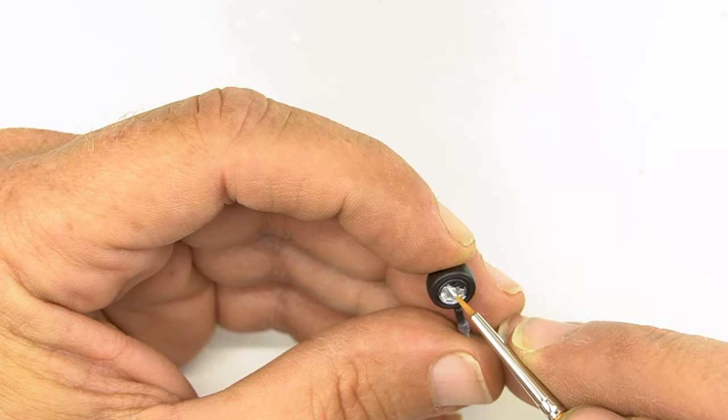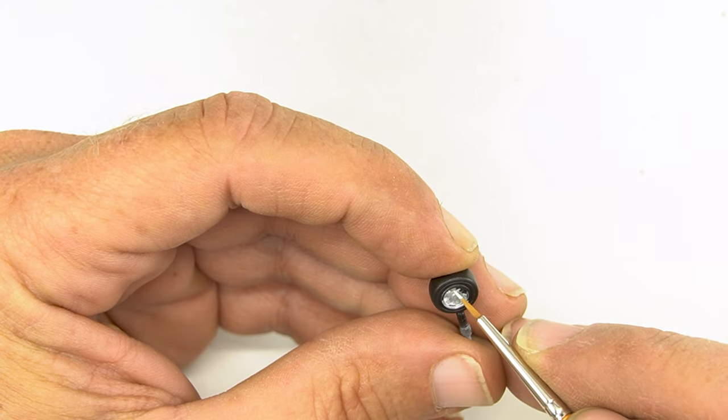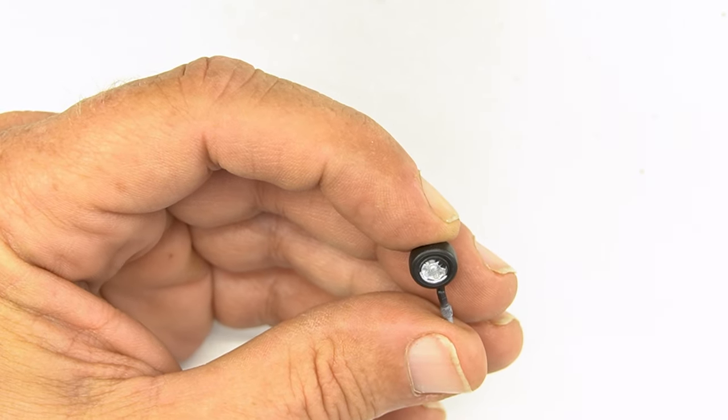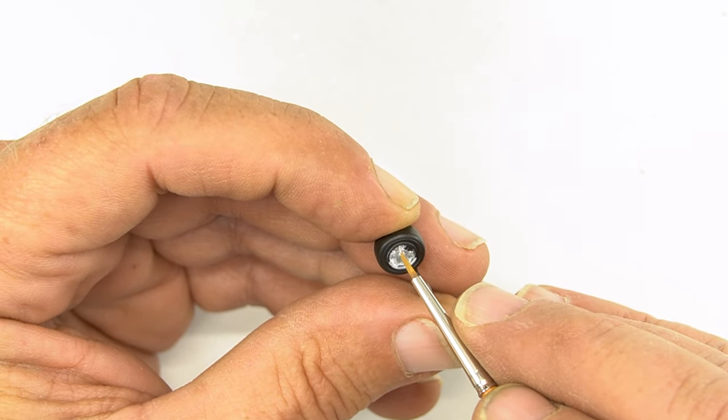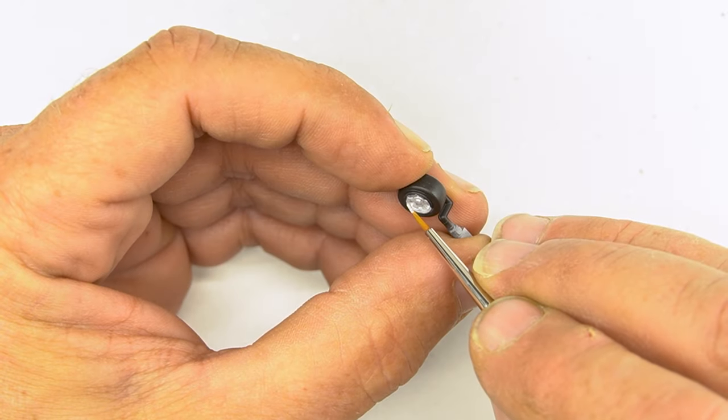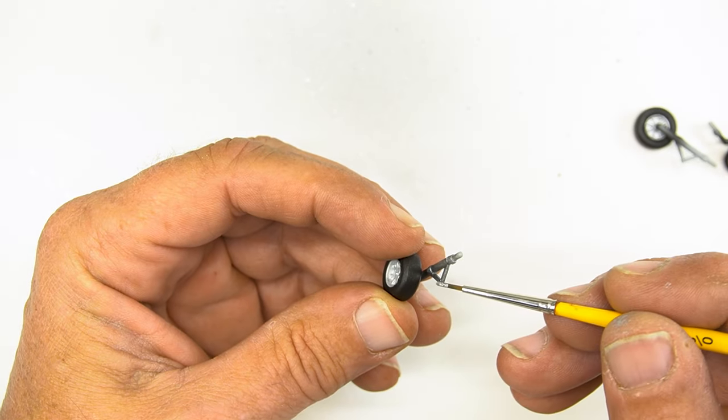For the wheels of the plane I'm using Ammo by Migs flat aluminum. I'm just going to brush it in. If I hit any of the black I'll go back and touch it up. There is a little flash on the outer rim of the wheel so you're going to have to take care of that.